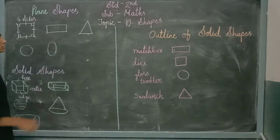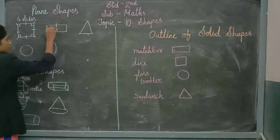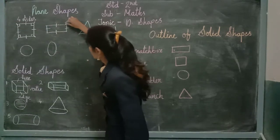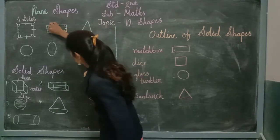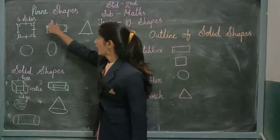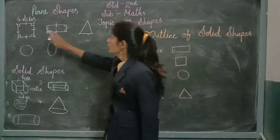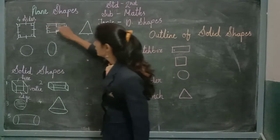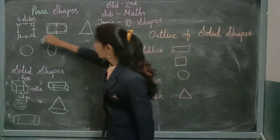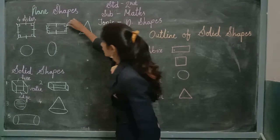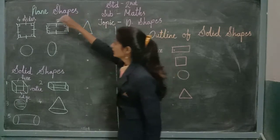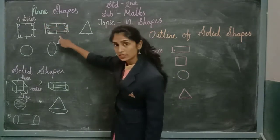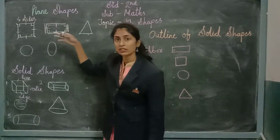Let us move on to our rectangle. A rectangle has 4 sides and 4 vertices. Now, opposite sides of a rectangle are equal. If I am talking about this side, these two sides are opposite, which means they are equal. Then this side is opposite to this side, so this side is also equal to this side. These two sides are equal and these two sides are equal in a rectangle.